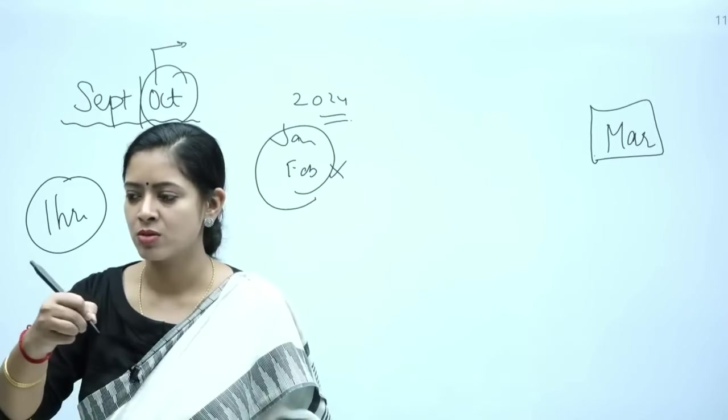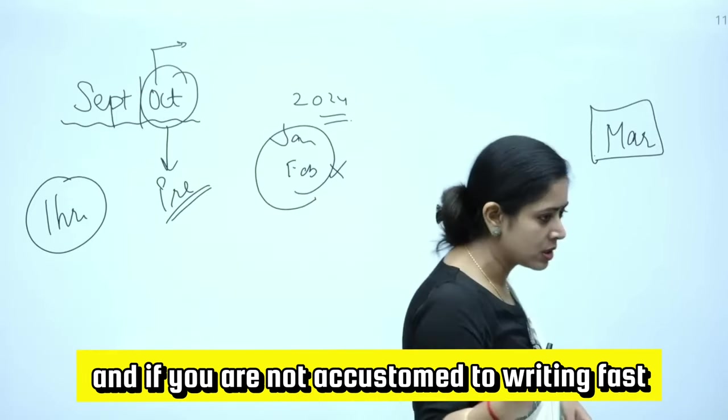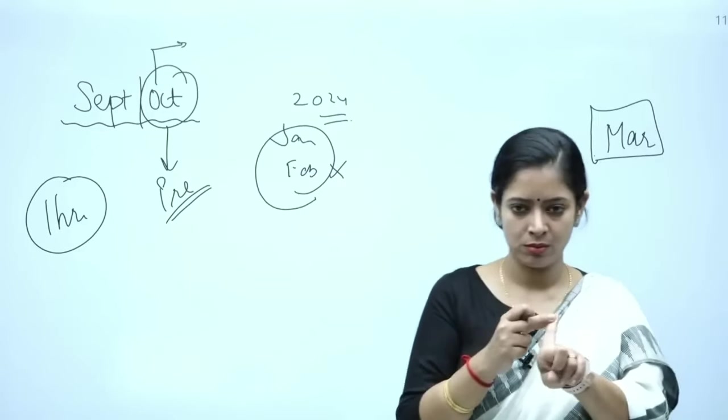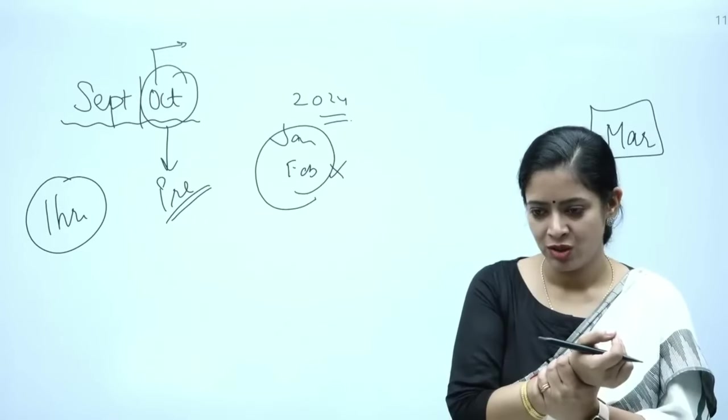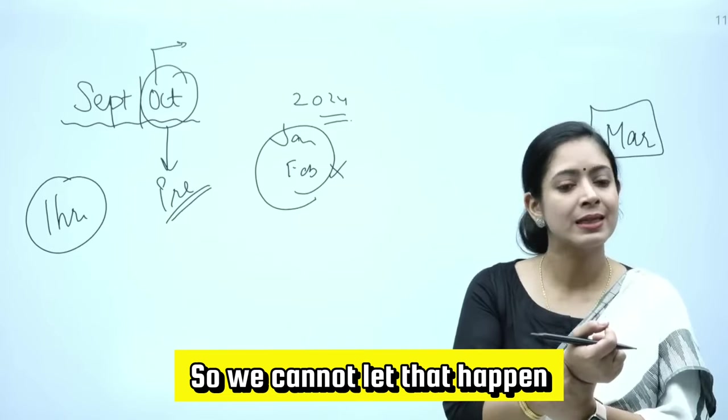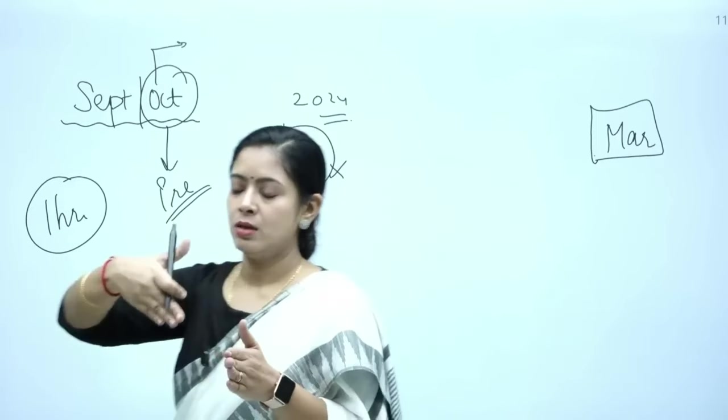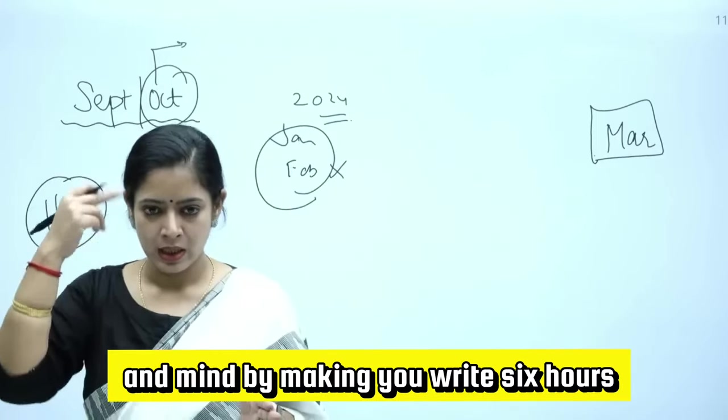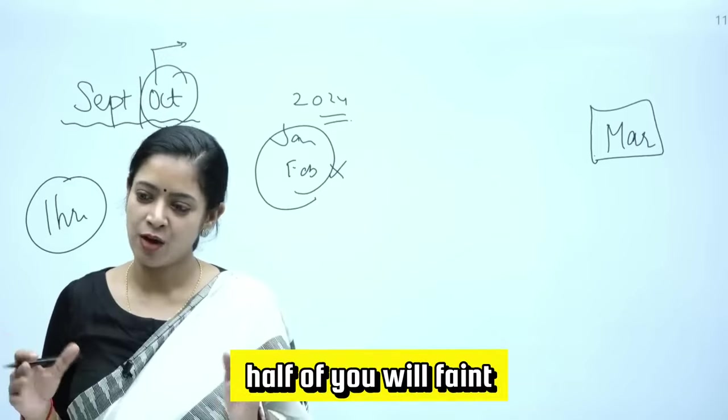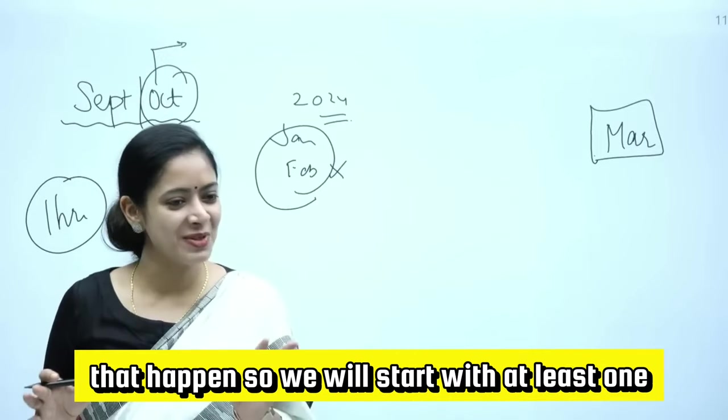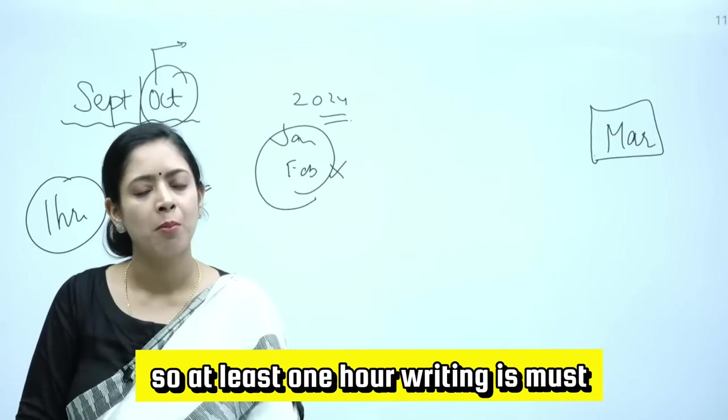This happens in mains also. If you are not accustomed to writing for long hours and if you are not accustomed to writing fast, either you will lose paper, you will not be able to finish paper, or the other thing is that your hand will fatigue. So we cannot let that happen. So slowly and steadily we will increase your speed plus this strength of your hand and mind by making you write six hours. But if I make you write six hours, half of you will fail, and so I can't let that happen. So we will start with at least one hour writing is must.